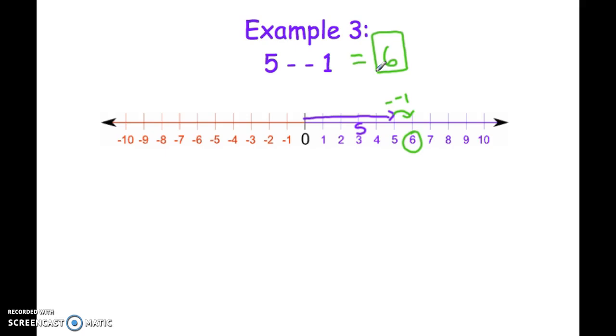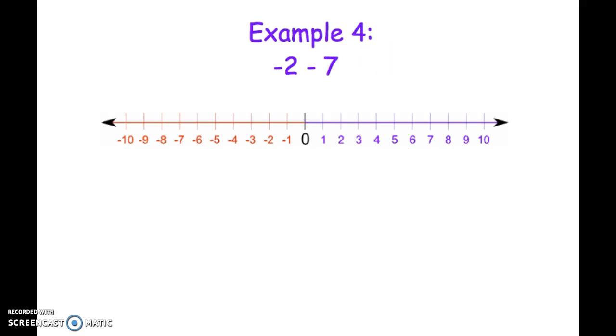Let's do one more final example: negative two minus seven. I start at zero and move left two to get to negative two. Then I'm subtracting seven positives, which makes my number go smaller. I'll move further to the left, counting seven spaces: one, two, three, four, five, six, seven. Notice I ended up at negative nine. Therefore, negative two minus seven is negative nine.